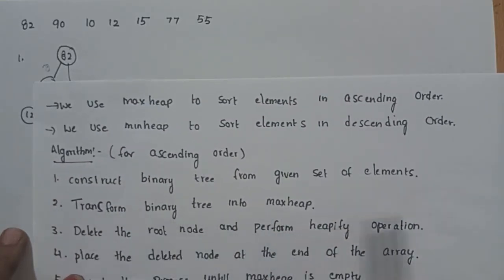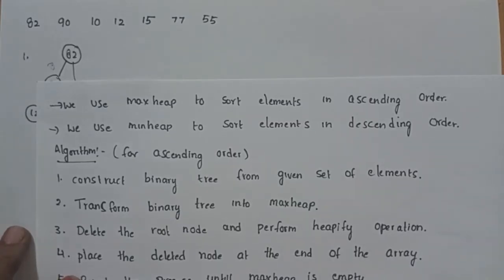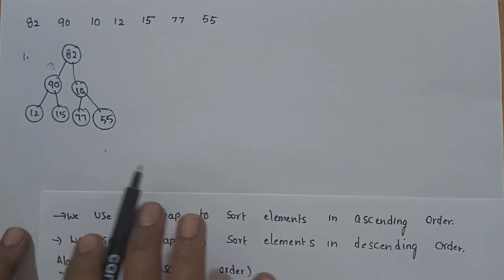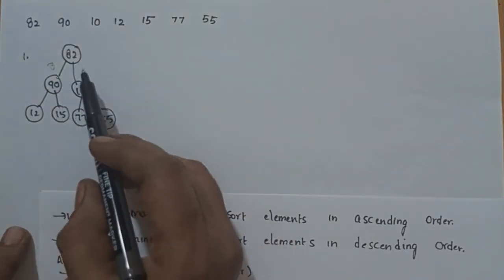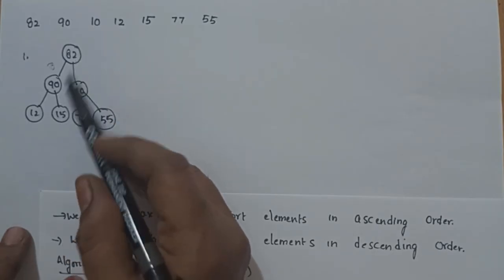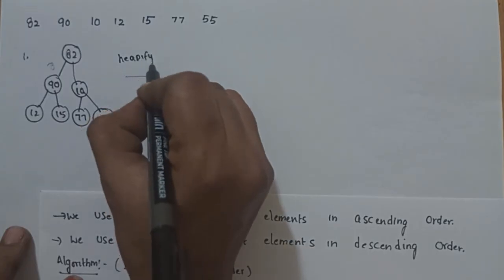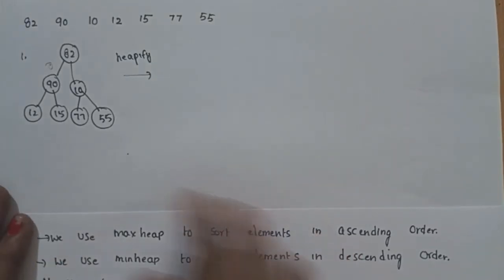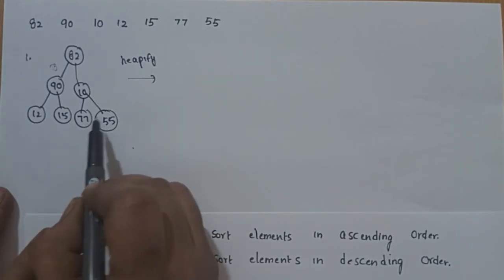The second step is to transform the binary tree into a max heap. We convert the binary tree to a max heap, which satisfies the structuring property — it must be a complete binary tree. Heapify is nothing but a series of swappings used to convert the binary tree into a max heap. Starting from the last level, we apply the max heap property.